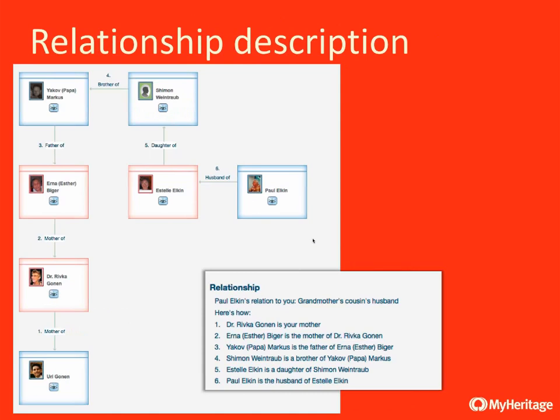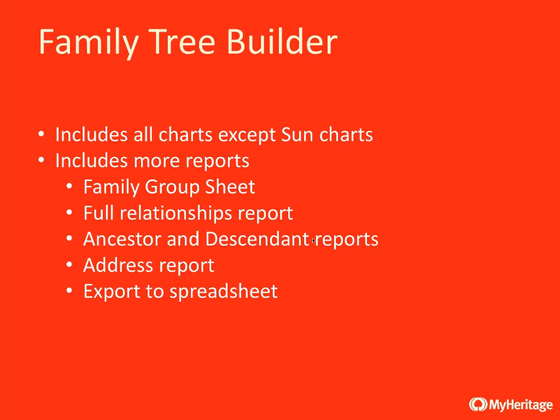Through Family Tree Builder — our genealogy software available free for Windows and Mac — all the charts I showed are available except for Sun charts, which are only available online. It also includes more reports: the book report, family group sheets, full relationship reports, and it allows you to create an Excel report listing people in your tree with whatever information you want about them, which you can then use for research in a spreadsheet.